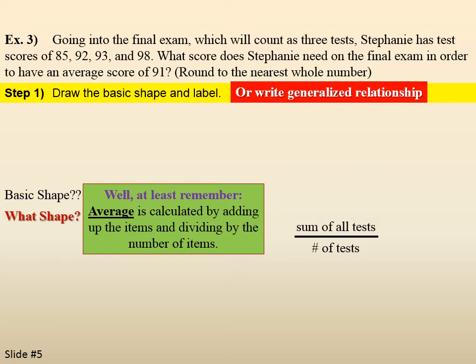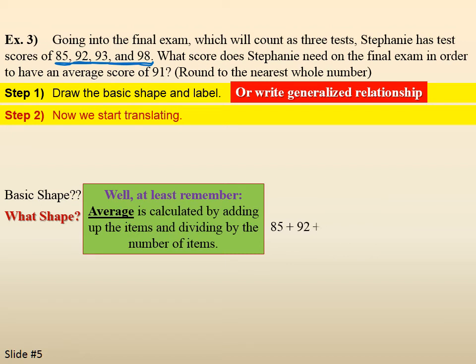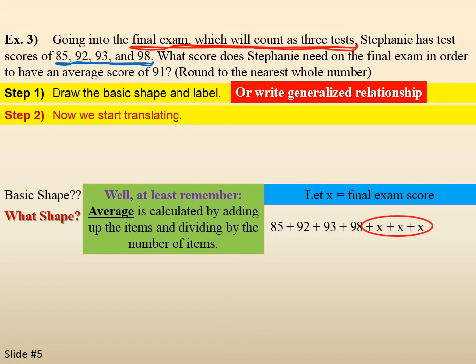So, the sum of all the test scores divided by the number of tests will give us our average. So, that's our generalized relationship. Step two, now we start translating. So, we have four test scores. 85, 92, 93, and 98. And, then we're going to let the final exam be an x. It counts as three tests, so I'm going to write it in three times. x plus x plus x. We're going to divide by the number of items, which is seven. And, that's supposed to equal 91.